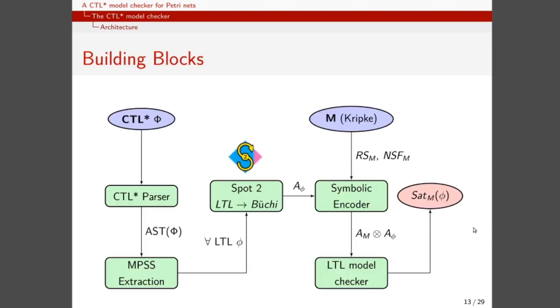We are now ready to describe the set of building blocks composing our program. As you can see, our model checker is made of a parser and an extractor of maximal proper state subformulas, which have been described in the previous example. Then, for each path formula generated, it is translated to a Büchi automaton using the Spot2 library, and then it is encoded to a symbolic procedure using the decision diagram to compose a synchronous product which is then given to an LTL model checker which generates the set of states over a model M which satisfies the path formula phi. This set of states is then combined with the other set of states generated by this procedure to build the final result of our model checking step.